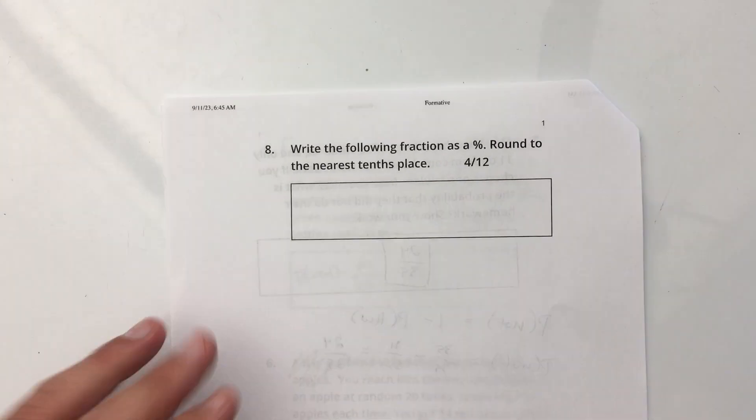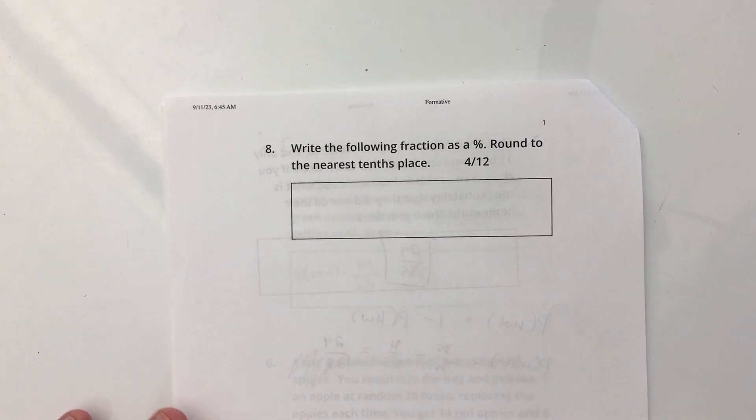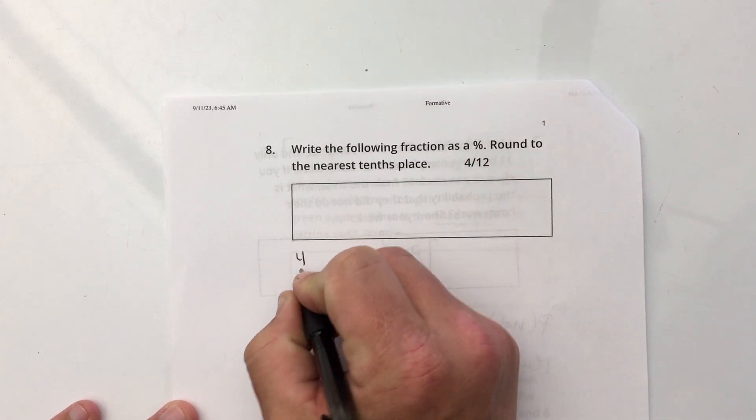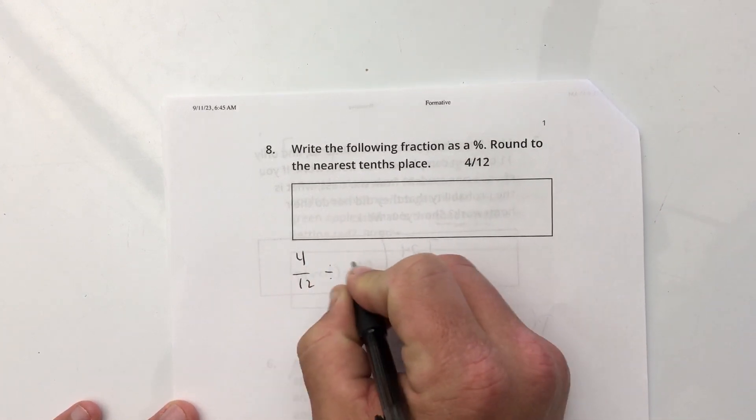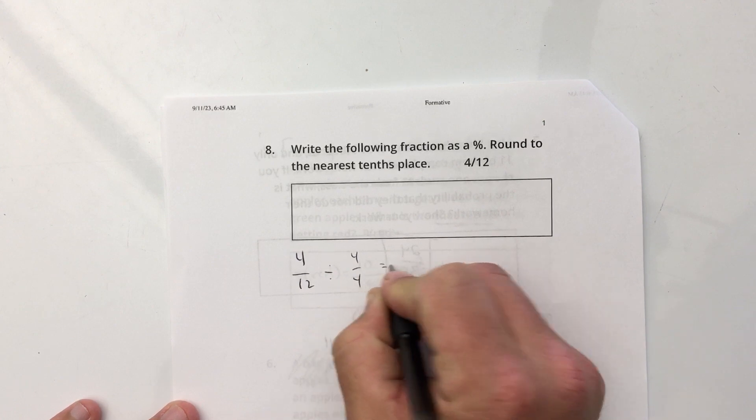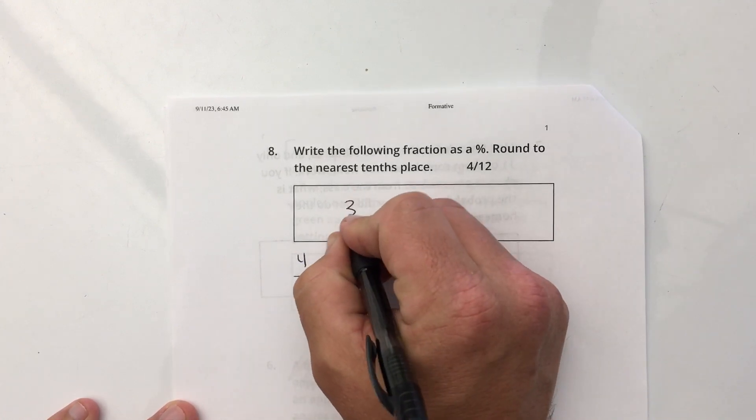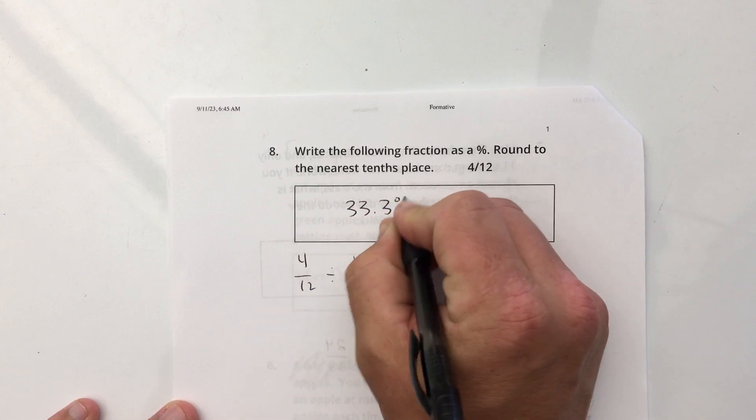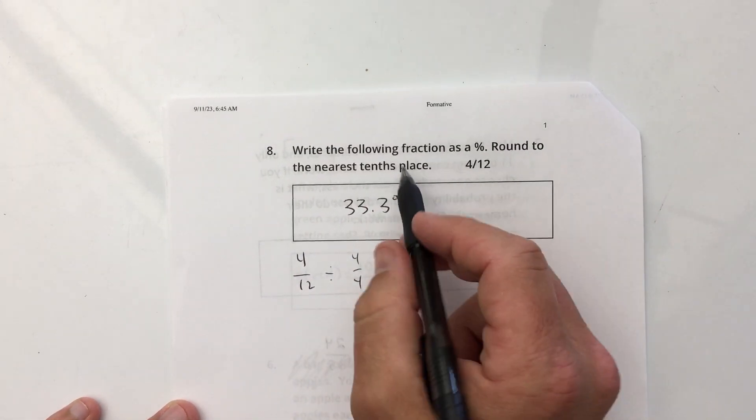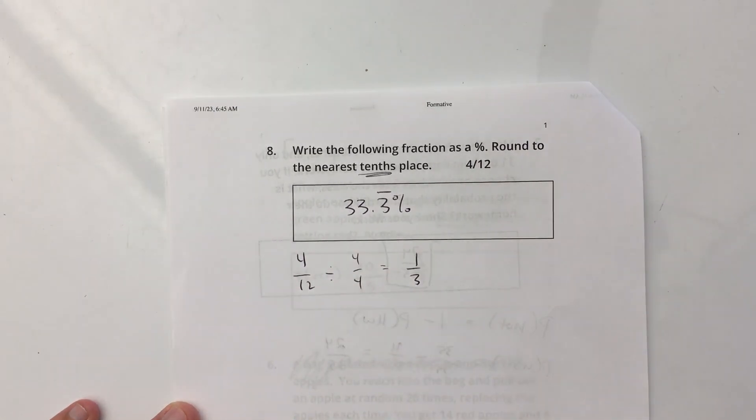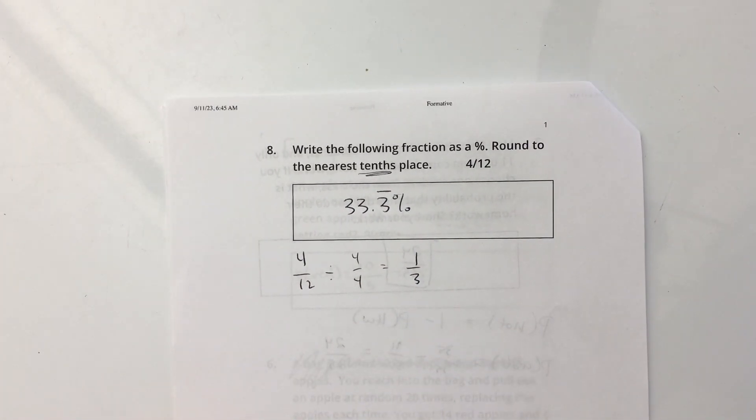Number eight. Write the following fraction as a percent, round to the nearest tenths place. Okay, this one, I know this one, right? 4/12. I can divide by 4/4, which is 1/3. Now, I just happen to know that that's 33.3 percent. It says round to the nearest tenths place. This is actually, of course, 33.3 repeating percent, but I can round to 33.3. On the test, I would accept both of those answers.